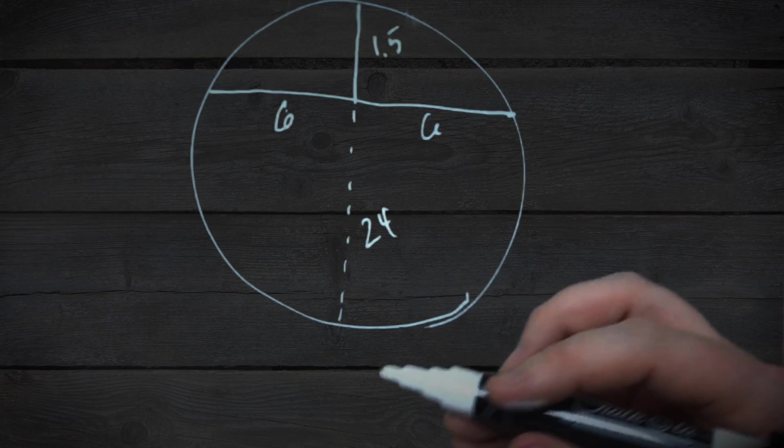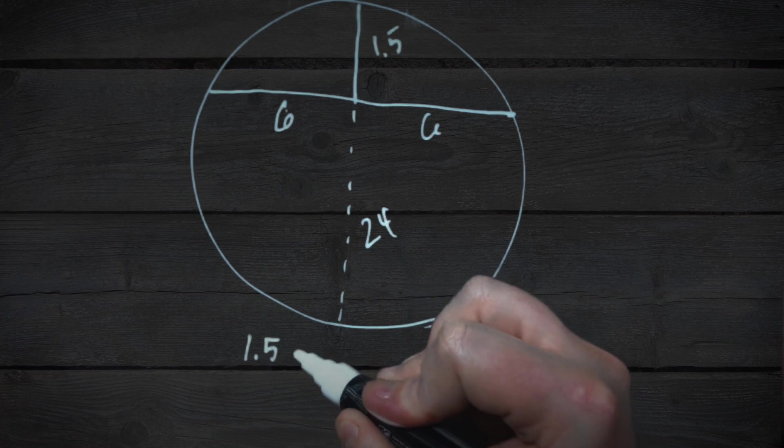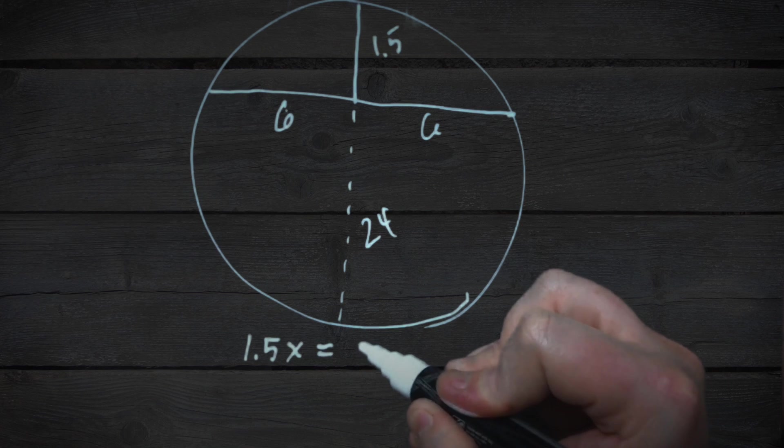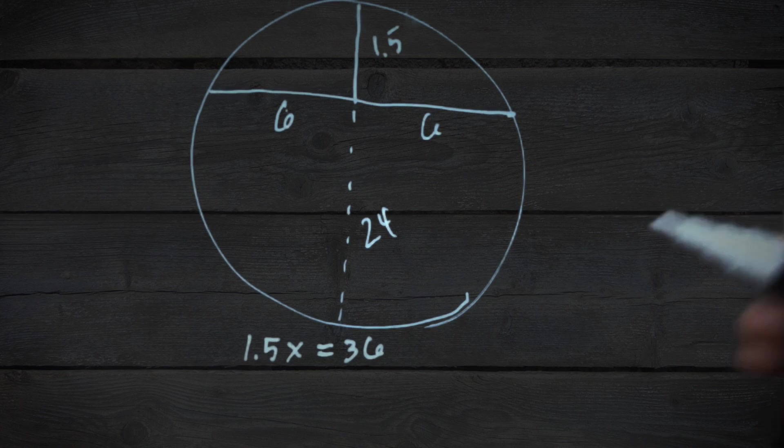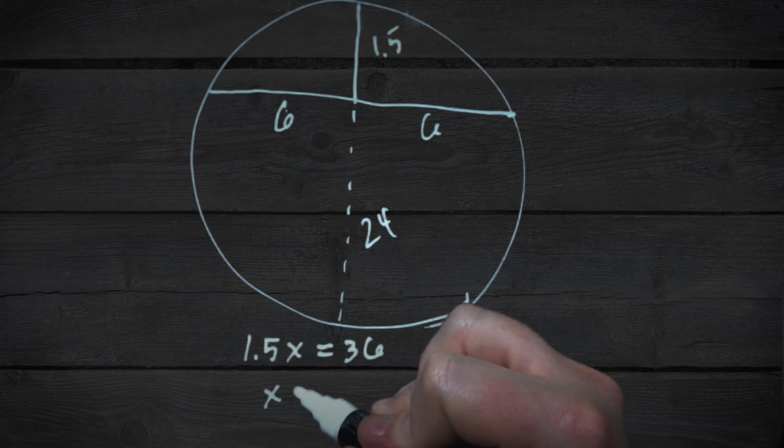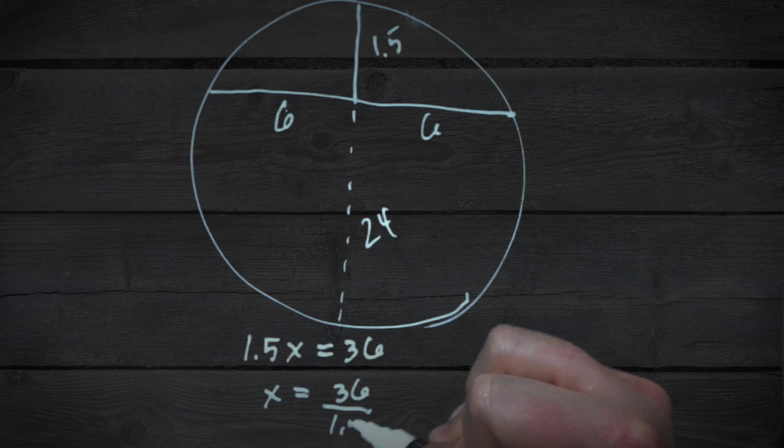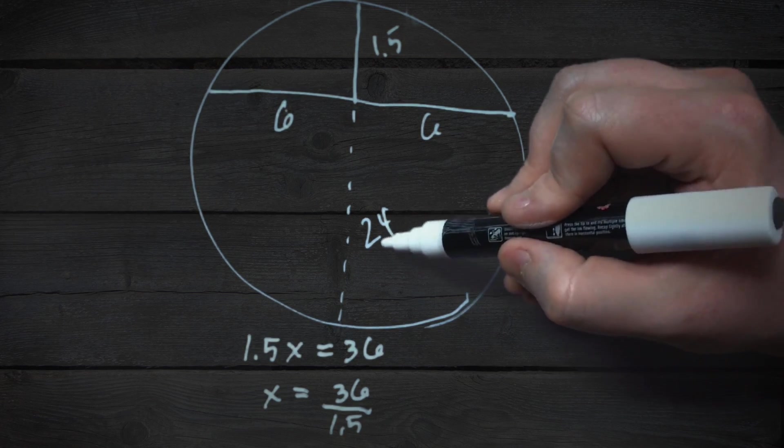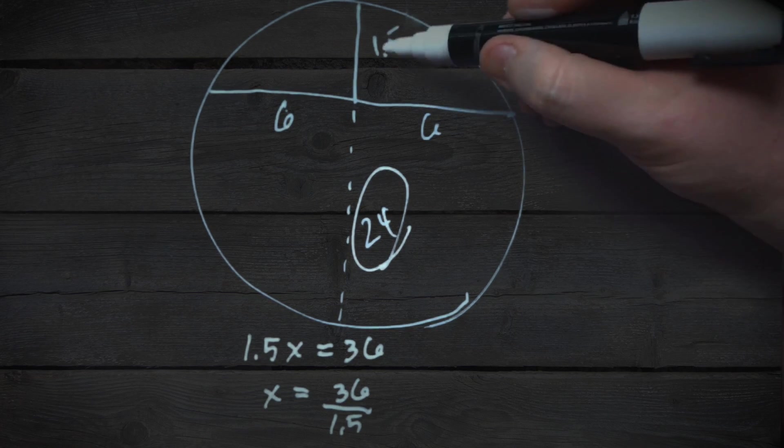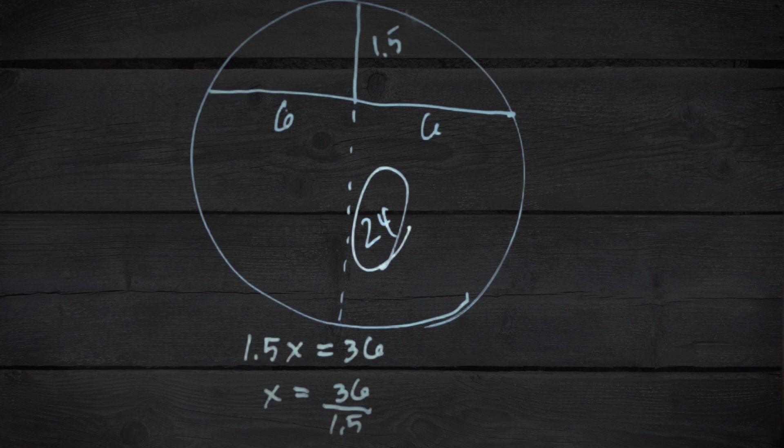So if you wanted to figure this out algebraically, all you really need to know here is that 1.5X equals 36. Or if you remember your first day of algebra, then X equals 36 over 1.5. So 36 divided by 1.5 will give us our X. In this case, that's our 24. 1.5 plus 24, that's our diameter. Divide that by 2 for your radius. And that's it.